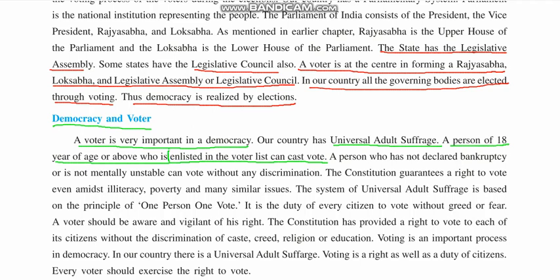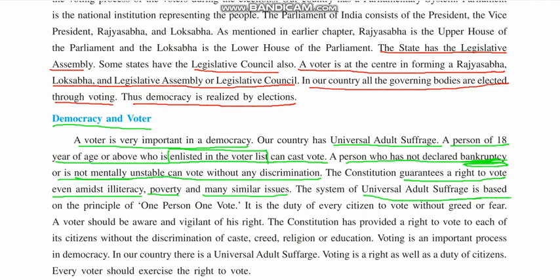A person's name must be in the voters list to cast a vote. A person who has not declared bankruptcy or is not mentally unstable can vote without any discrimination. The Constitution guarantees the right to vote even amidst illiteracy — even if you are illiterate or poor, you can vote. The system of universal adult suffrage is based on the principle of one person, one vote.